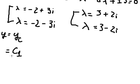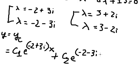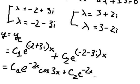So for the first one, y equals to yc, and that is c1, the constant number 1, times e to the power of negative 2 plus 3i multiplied by x, and we have c2 times e to the power of negative 2 minus 3i multiplied by x. So we can write this as c1 e to the power of negative 2x cosine 3x and c2 e to the power of negative 2x sine 3x.